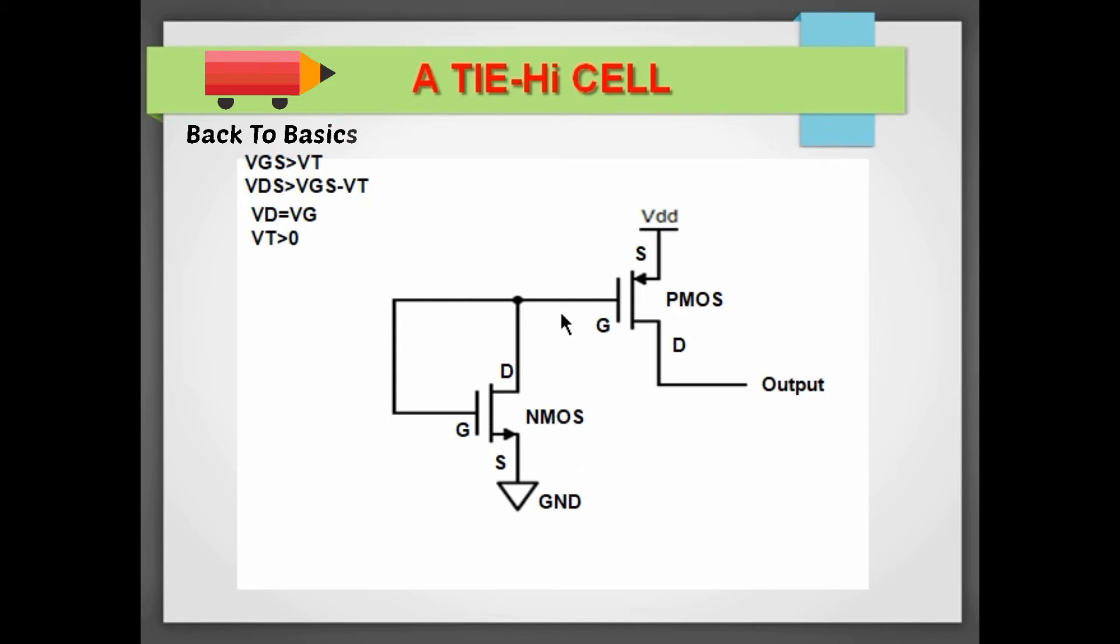Therefore this NMOS is always going to be in saturation mode. Now an NMOS acts as a variable resistor in saturation mode, so now NMOS will act as a pull-down resistor and will always give a low voltage at the gate of this PMOS and will keep the PMOS on all the time.